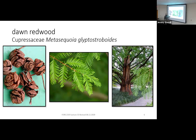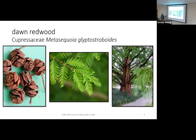Another distinguishing feature of Dawn Redwood is its very fluted trunk. Whereas bald cypress tends to be more round, each time a large limb comes out of the trunk there's a furrow below it, giving the trunk an overall fluted appearance. These have been planted in Virginia, South Carolina, and possibly parts of Texas.